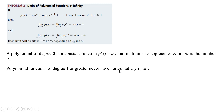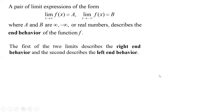Polynomial functions of degree one or greater never have any horizontal asymptotes. A pair of limit expressions of the form — limit of F(x) as X approaches positive infinity equals A, and limit of F(x) as X approaches negative infinity equals B — where A and B are real numbers or positive or negative infinity, describes the end behavior of the function. The first limit describes the right end behavior and the second describes the left end behavior.